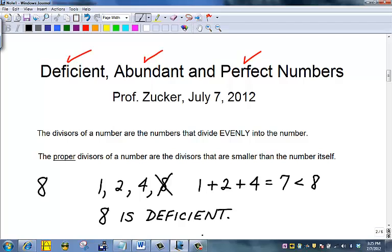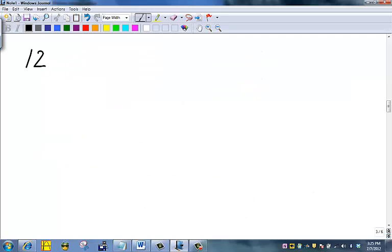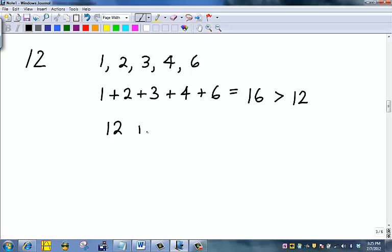Now let's try 12. The proper divisors of 12 are 1, 2, 3, 4, 5 does not divide evenly into 12, 6 divides 12, and the only other number that divides 12 is 12 itself, but the proper divisors must be less than 12. Now we'll add them up. 1 plus 2 plus 3 plus 4 plus 6 equals 16. And 16 is greater than 12. So we say 12 is abundant.